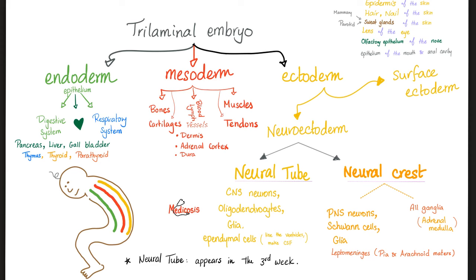The delicate, tender pia and arachnoid maters are hugging the brain — you can consider them as if they are part of the brain, so ectoderm. Now, tell me about the ectoderm. We have two types: surface ectoderm and neuroectoderm. The neuroectoderm will give you your entire nervous system.